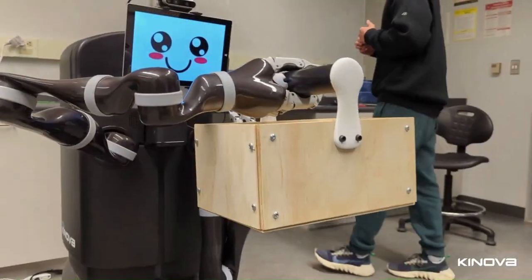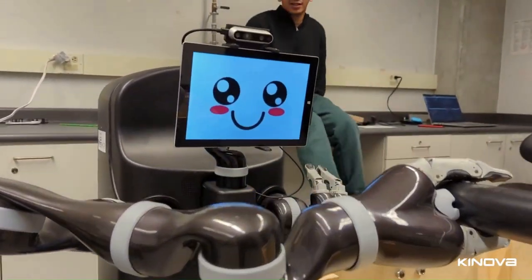We were one of the first groups who had one of the MOVO Mobile Manipulators which has a pair of Gen 2 arms on it, and we now have, in addition to those, a couple of Gen 3 arms as well that we use for our undergrad and graduate education and research.